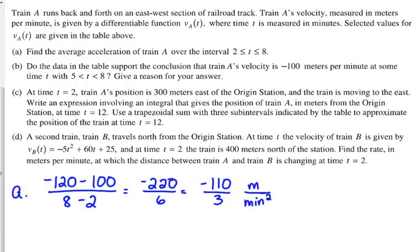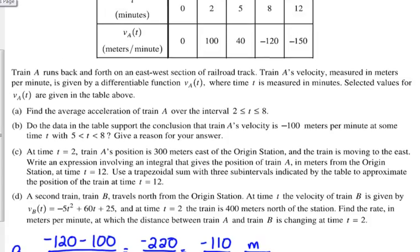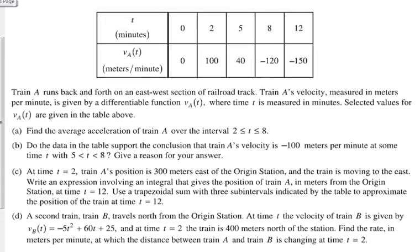Part B, do the data in the table support the conclusion that train A's velocity is negative 100 meters per minute at some time between 5 and 8? What do y'all think? Based on? What's your reason? IVT. IVT. Yes.